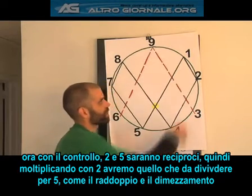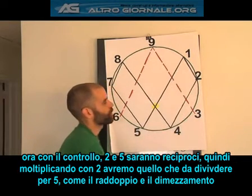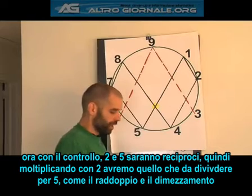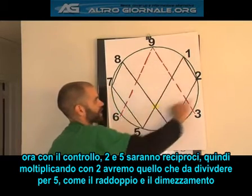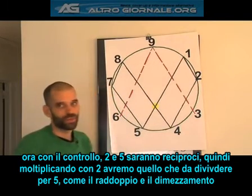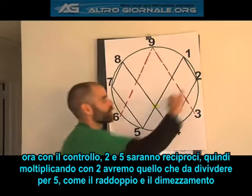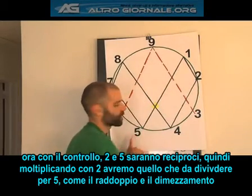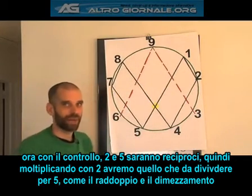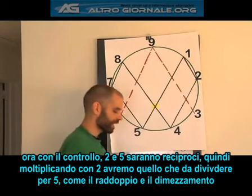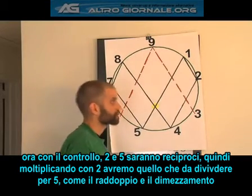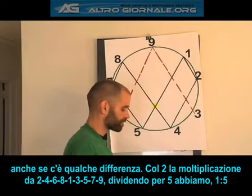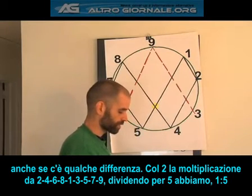Just to make it a little bit more thorough, let's try 2. So now here with 1 as my control, 2 and 5 are going to be reciprocal. So when I multiply by 2, I should get the same thing I get when I divide by 5 — just like doubling and halving, even though they're a little bit different.